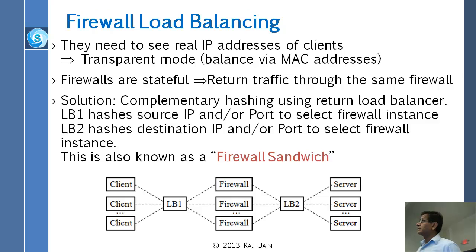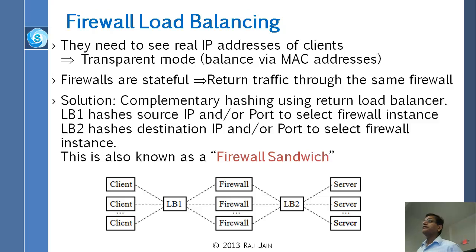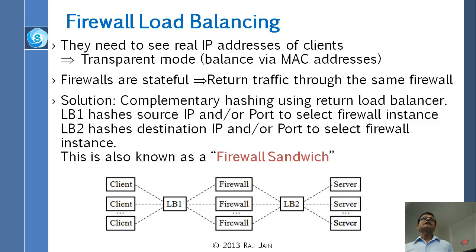One load balancer could do source IP and source port, and the other one, while coming back, will do destination IP and destination port. That way, they will both select the same firewall for both directions of traffic. You understand the complication when we do firewall load balancing, unlike server load balancing. In firewalls, you don't have a choice of using dual NAT.